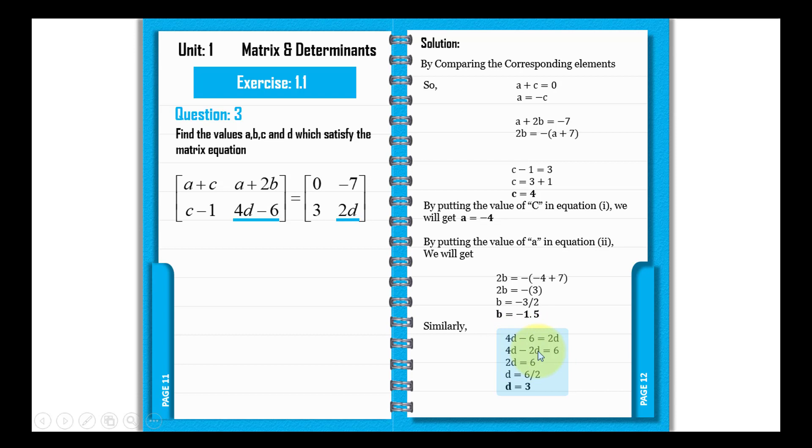4d minus 2d equals 2d. This was minus 6 on the left side. When we take it to the right side, it becomes 6 plus.